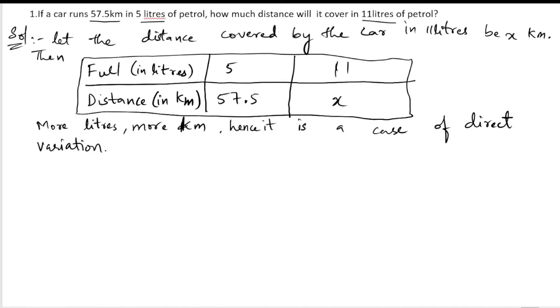Now let us solve. We set up the proportion: 5 divided by 57.5 equals 11 divided by x.